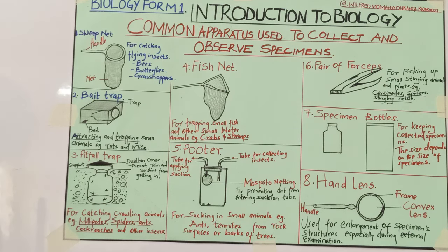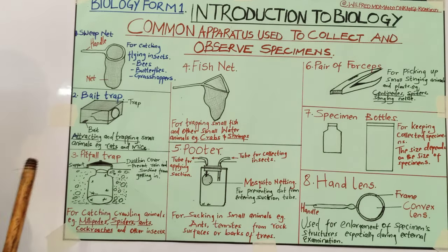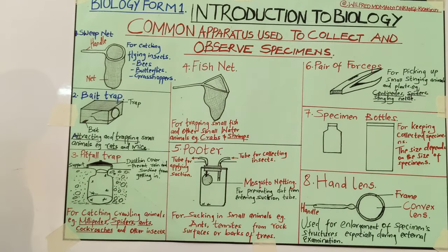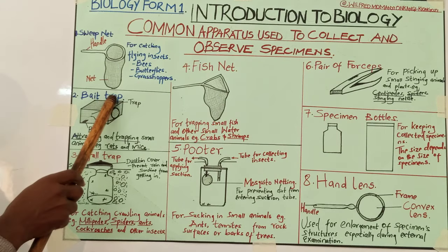So any specimen that is flying — such as butterflies and grasshoppers — you catch them using what we call the sweep net. Number two is the bait trap.